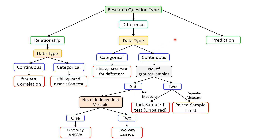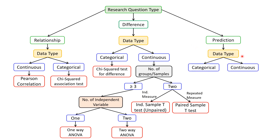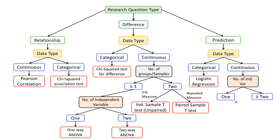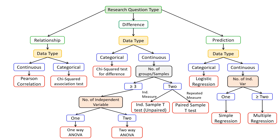For the prediction purpose — predicting one variable based on other variables — we again check the data type. If it is categorical data, we apply logistic regression. If it is continuous data, we check the number of independent variables. If the number of independent variables is 1, we apply simple regression. If it is more than 2, we apply multiple regression.